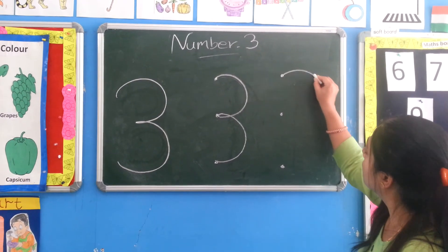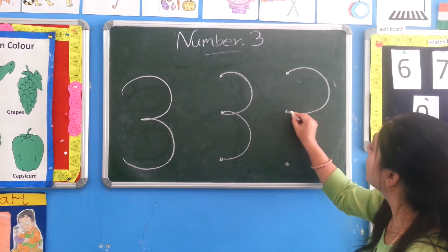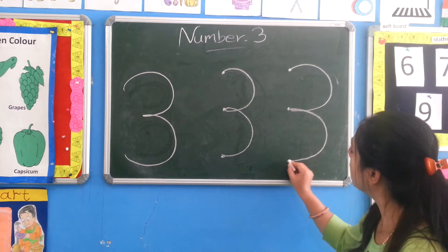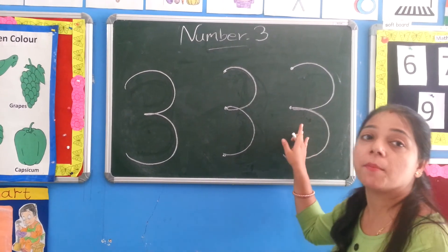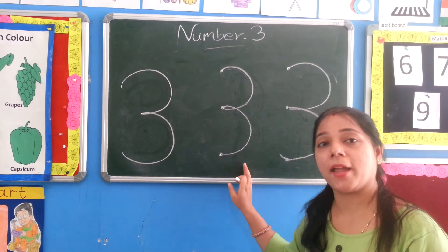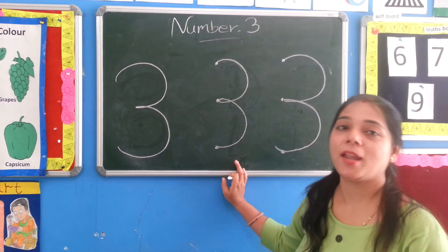See? Left open curve. And left open curve. This way we have number 3. Keep practicing. Bye bye.